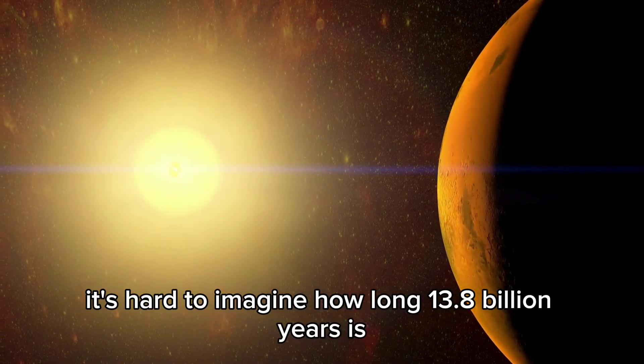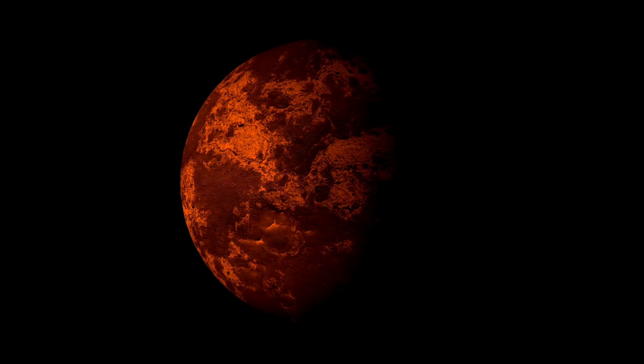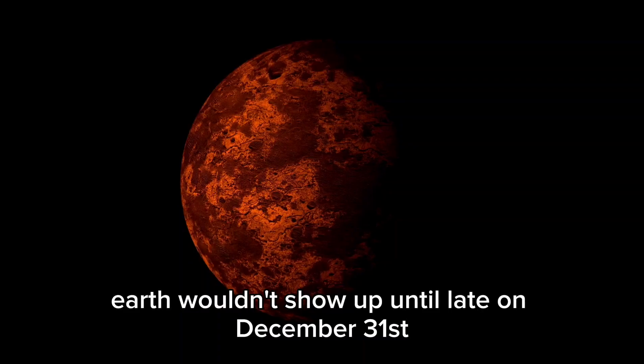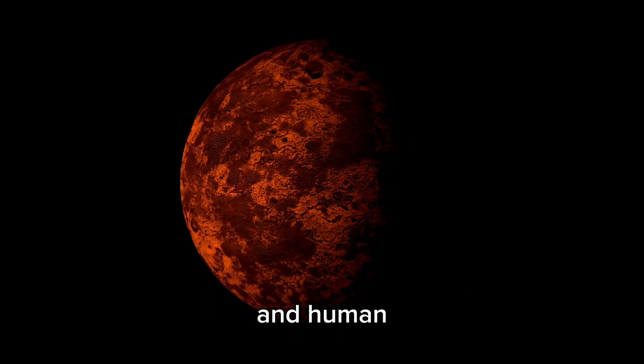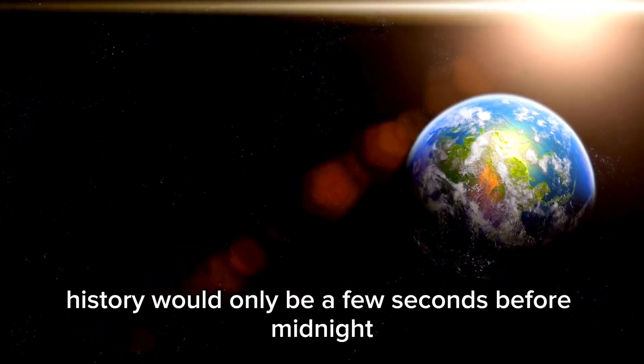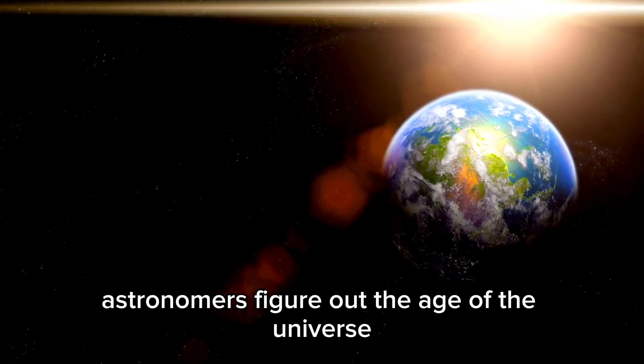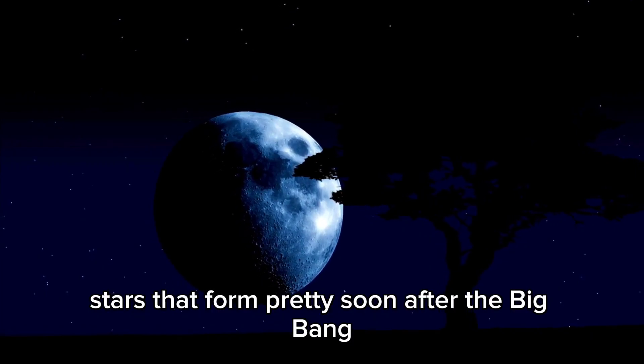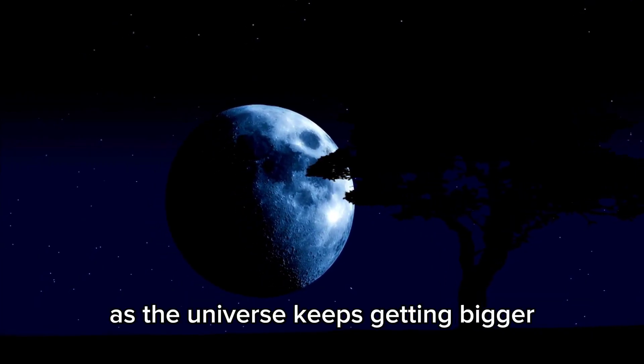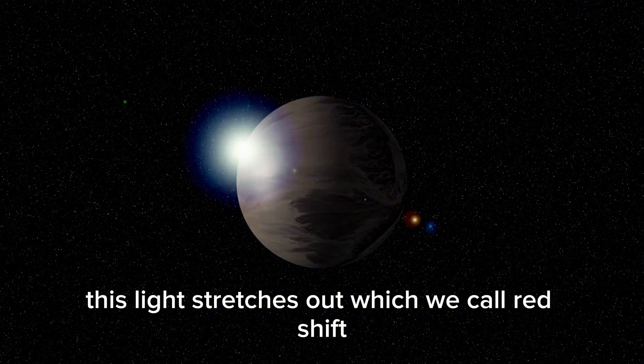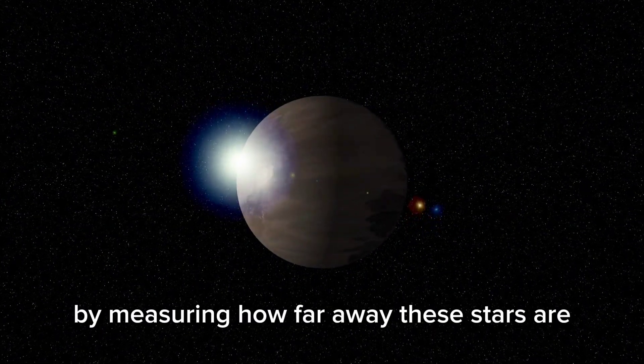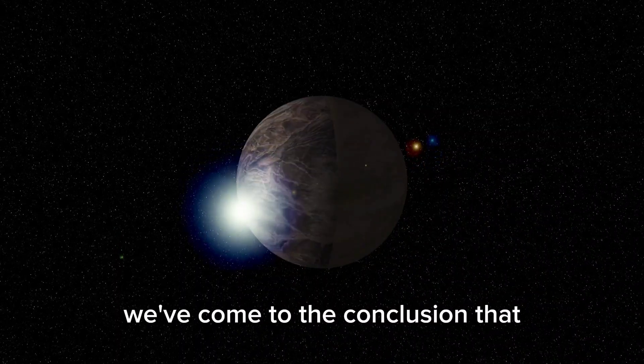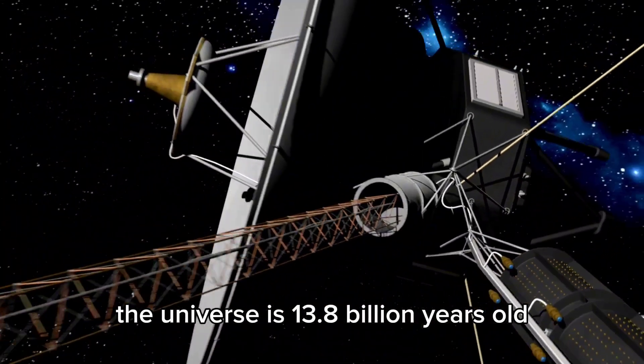It's hard to imagine how long 13.8 billion years is. If we shrunk the whole history of the universe into a year, Earth wouldn't show up until late on December 31st, and human history would only be a few seconds before midnight. Astronomers figure out the age of the universe by looking at light from faraway stars that formed pretty soon after the Big Bang. As the universe keeps getting bigger, this light stretches out, which we call redshift. By measuring how far away these stars are and how fast the universe is growing, we've come to the conclusion that the universe is 13.8 billion years old.